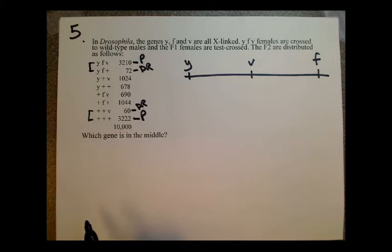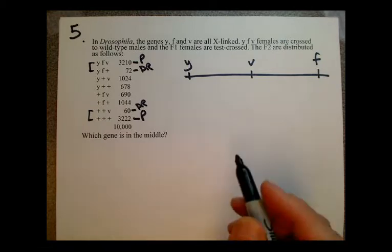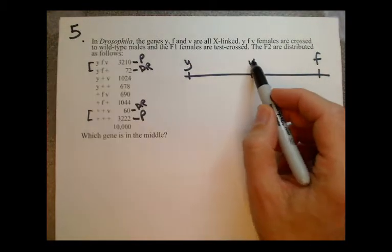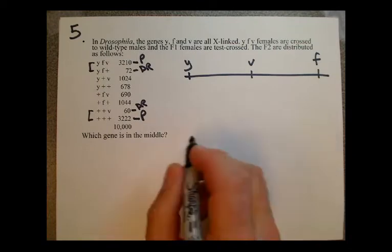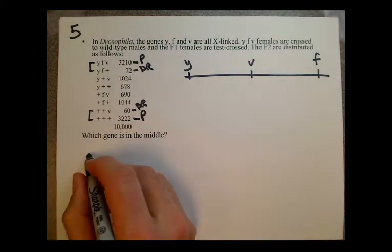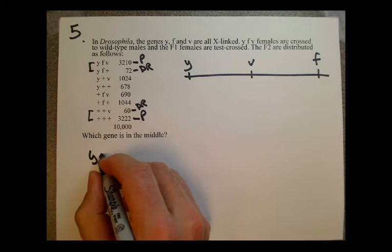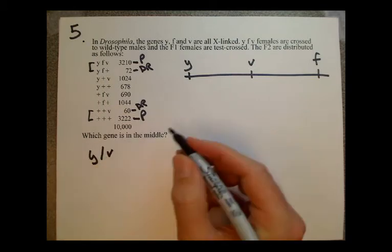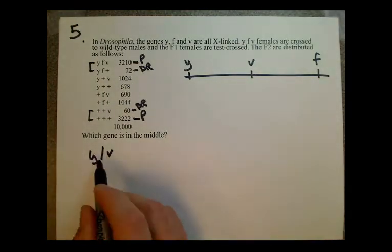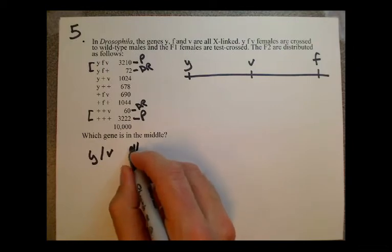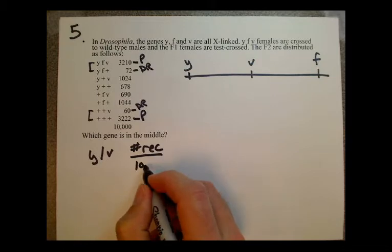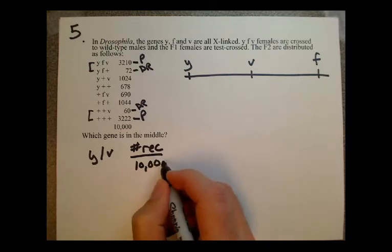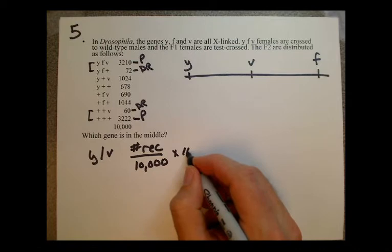The second part of this problem is to draw a map with the distances indicated. My recommendation is just to calculate these two short distances individually. So if we wanted to calculate the distance between Y and V, we just need to find the number of recombinants divided by the total, which is going to be 10,000 in this case, times 100.